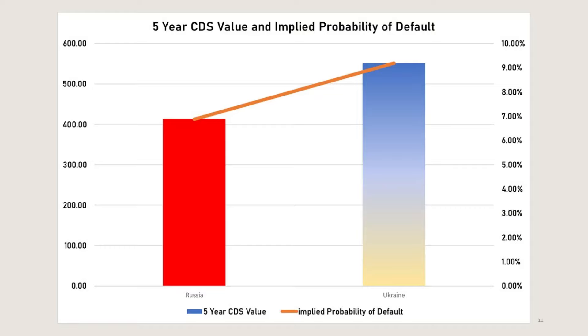Both countries are being priced with a significant default risk — around 7% for Russia and 9% for Ukraine. What we can see is that Ukraine is being priced by the CDS issuers as about 33% more likely to default than Russia. So here's where it gets interesting: if the bond rates are higher in Ukraine and the CDS implied rate of default is higher in Ukraine, that means investors are not confident the results of the Ukrainian conflict will be favorable to the Ukrainian economy. A strong and liquid CDS market is vital to the function of a modern economy, and it is a good metric for the health of an economy and the health of a nation.